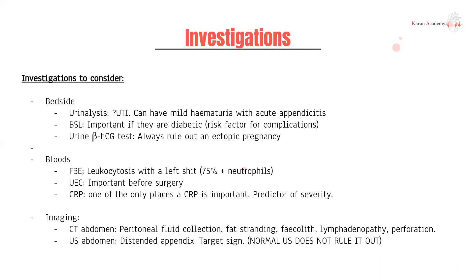For imaging, we can do a CT abdomen or an ultrasound. Both are useful, but CT abdomen with contrast is the gold standard for acute appendicitis — you can see peritoneal fluid collection if there's a perforation, fat stranding indicating inflammation around the appendix, the fecalith, or lymphadenopathy. An ultrasound will show less: you can see a distended appendix and a target sign with hypoechoic segments near the ileocecal valve, but always know that a normal ultrasound does not rule out appendicitis.